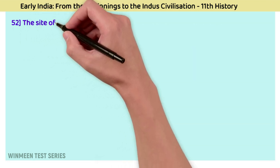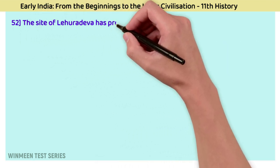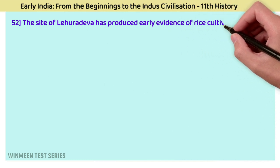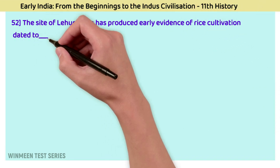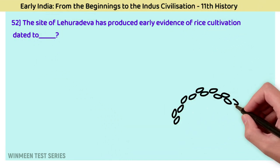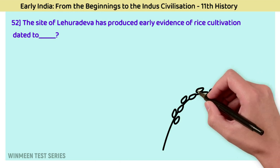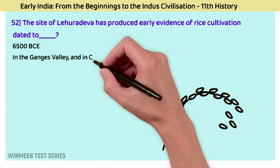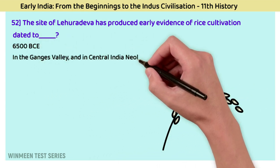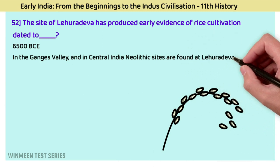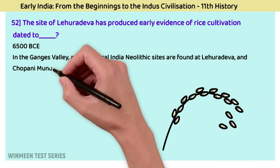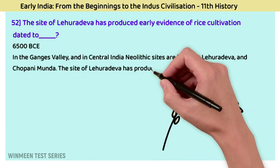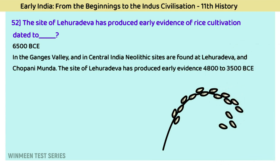Question 52: The site of Lahuradewa has produced early evidence of rice cultivation, which is dated to? The answer is 6500 BCE. In the Ganges Valley and central India, Neolithic sites are found at Lahuradewa and Koldihwa. The site of Lahuradewa has produced early evidence of rice cultivation dated to 6500 BCE, with culture continuing to 4800 to 3500 BCE.